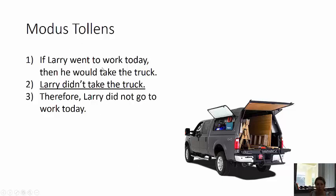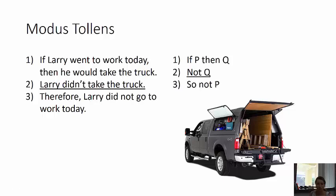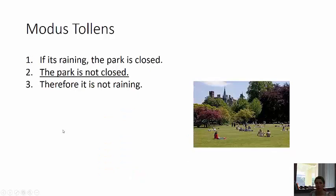If P then Q, not Q, then not P — modus tollens. And if one and two are true, three follows necessarily and the argument is sound. Valid argument.